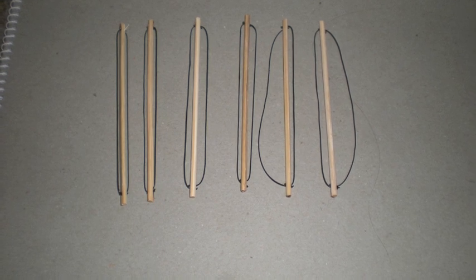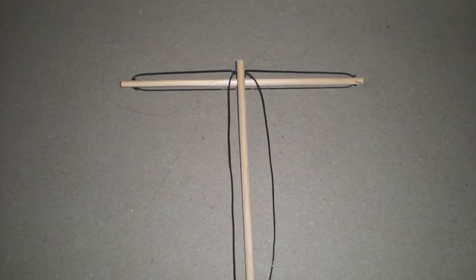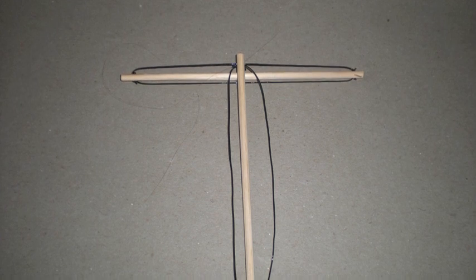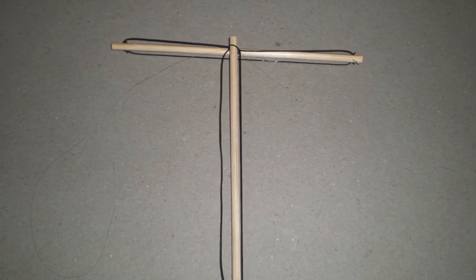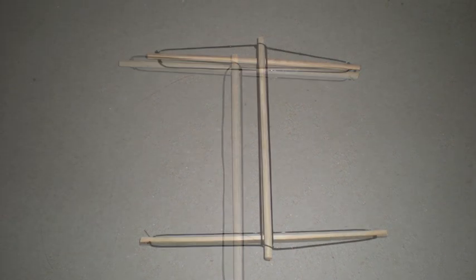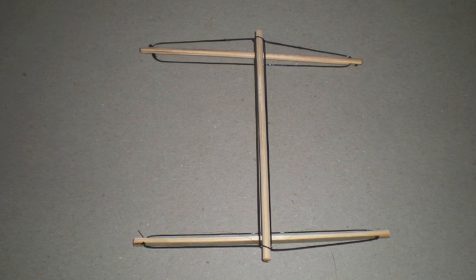Now the build process can begin. You connect the elements by sliding the cord of one strut through the groove of another, and then using a cord of the newly connected strut to secure the connection. Follow the pattern you see here to connect all elements.